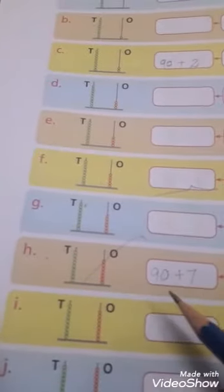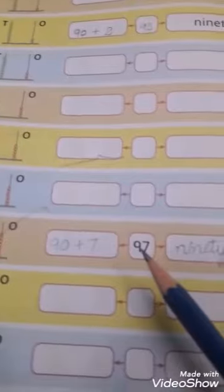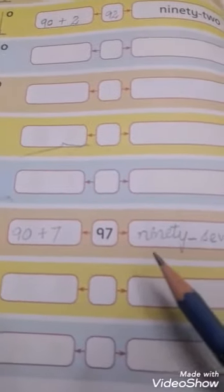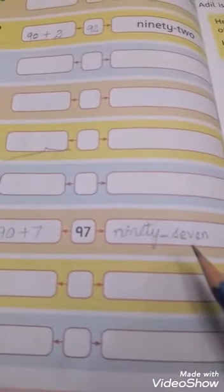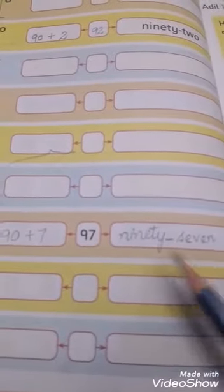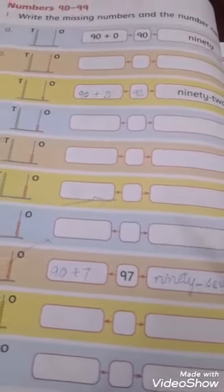90 plus 7 equals 97, ninety-seven. Rest of all questions you have to do by your own selves. Thank you.